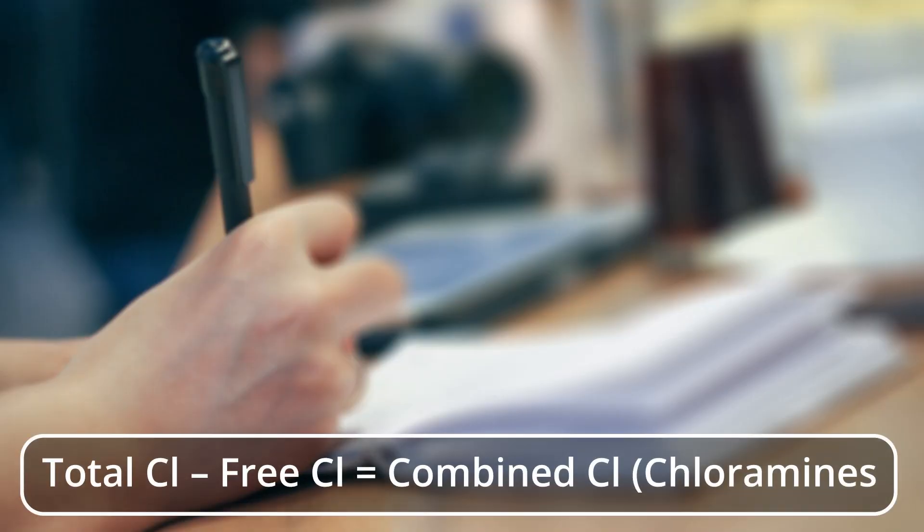Chloramines are usually measured as combined chlorine residual. You find this by subtracting the free chlorine residuals from the total chlorine residual. Total chlorine minus free chlorine equals combined chloramines.